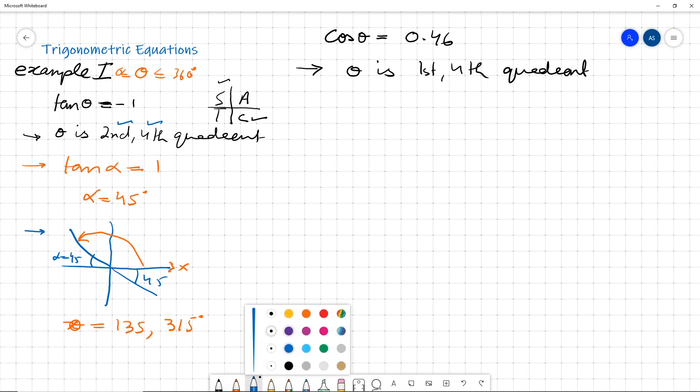Then we find the basic angle. For cos alpha equals 0.46, take the inverse. The cos inverse of 0.46 gives a basic angle of 62.6 degrees.